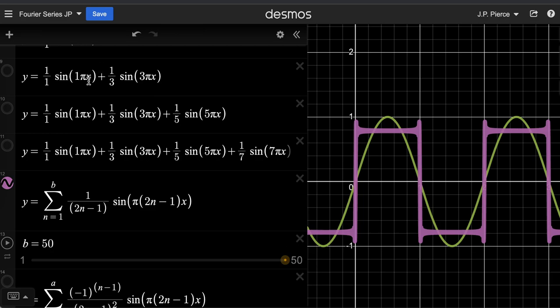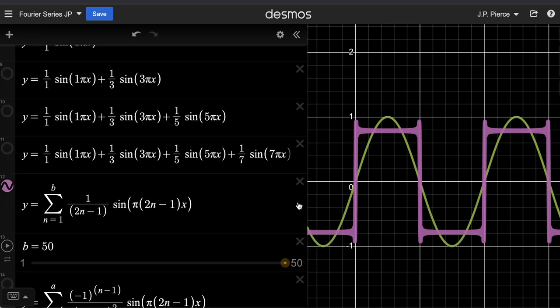So by keeping all the odd terms in this series, you end up with a square wave here instead of a sawtooth.